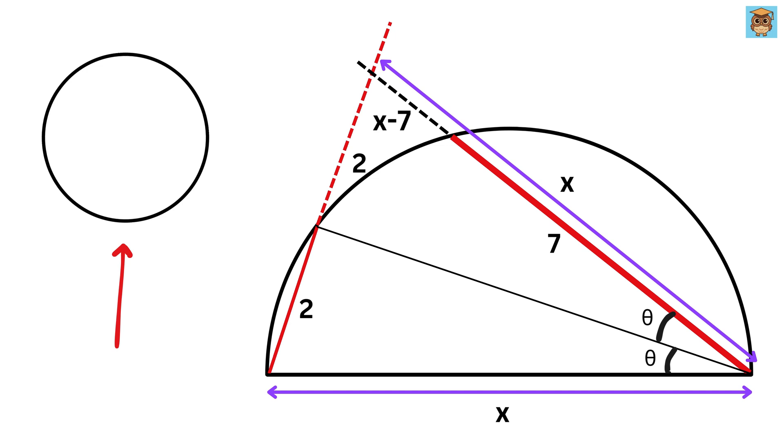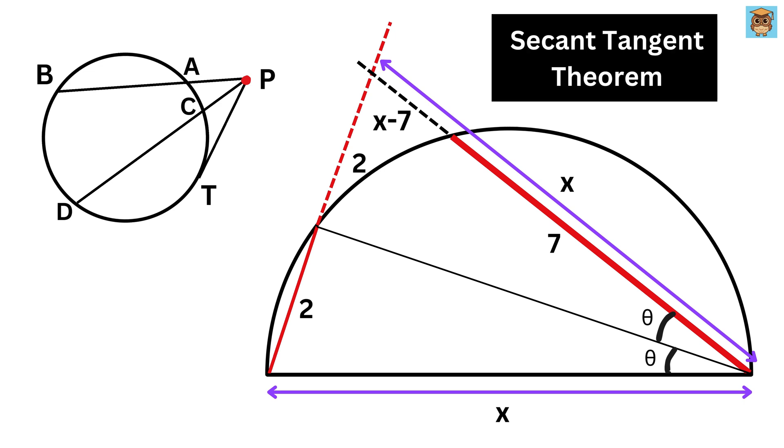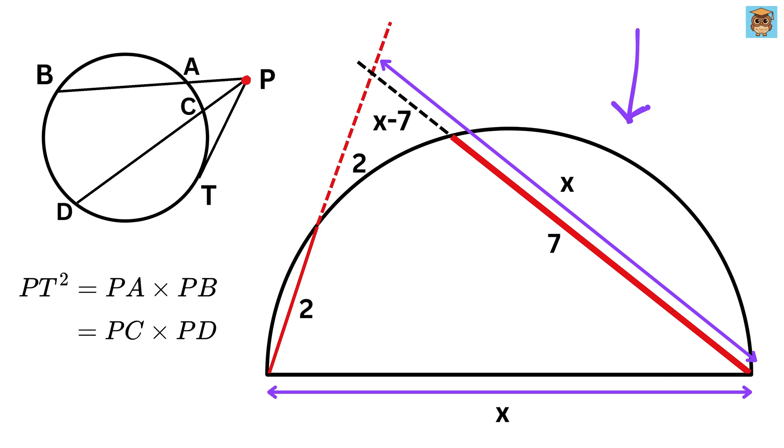Now consider this circle, and any exterior point to this circle like this point P. Draw these secants such that it cuts the circle at points A and B here, and C and D here. Then draw a tangent line from P, like this which touches the circle at point T. So, using the second tangent theorem, we get PT squared equals PA times PB, which also equals PC times PD.